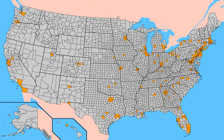The United States Electoral College is a body of electors established by the United States Constitution, constituted every four years for the sole purpose of electing the President and Vice President of the United States. The Electoral College consists of 538 electors, and an absolute majority of 270 electoral votes is required to win an election.